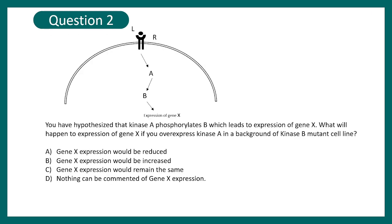Next question, question number two says you have hypothesized kinase A phosphorylates B and leads to expression of gene X. What will happen to the expression of gene X if you over express kinase A in a background of mutant kinase B? So this is a hypothetical cell signaling pathway. You think that ligand binding to receptor leads to activation of kinase A which further activates kinase B and that leads to the target gene X.